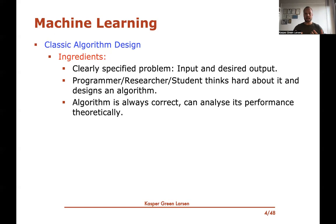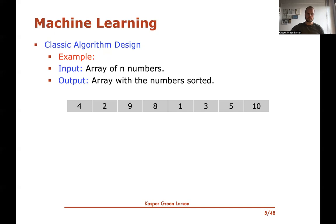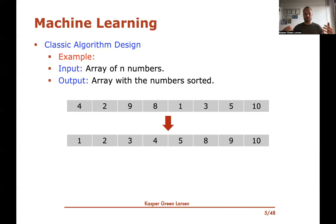The algorithm is typically always correct, and you can sit down and analyze its performance theoretically — maybe you can say something about the running time of the algorithm. So maybe just to give an example to make it a little bit concrete: one of the first algorithmic problems that you encounter in an algorithms course is how do you sort an array of n numbers. There's a clearly defined input — an array of n numbers, like on the picture here — and then there's a clearly defined desired output, in this case the same array but with the numbers in sorted order.